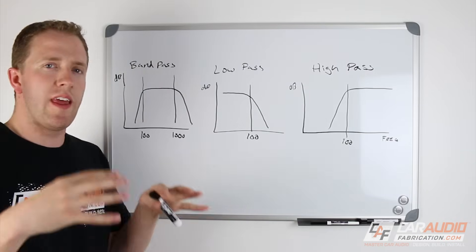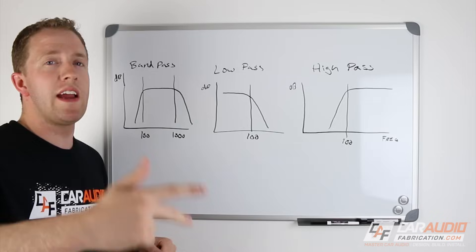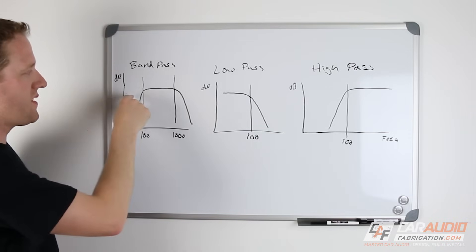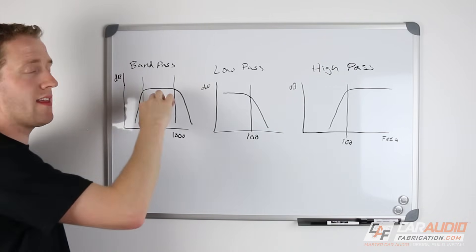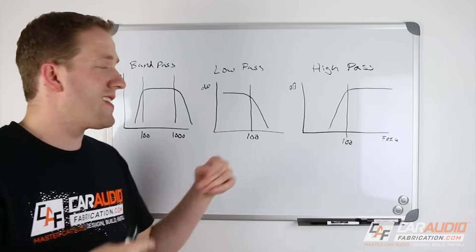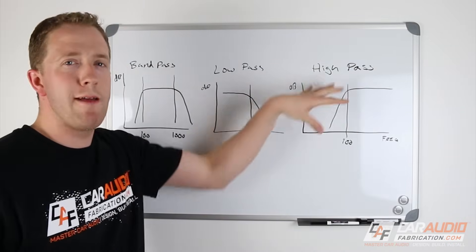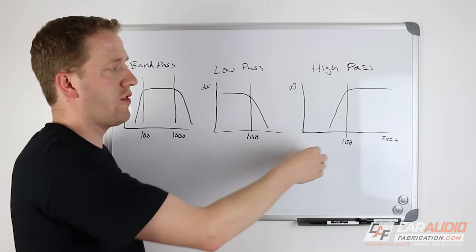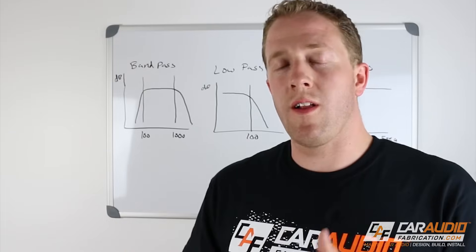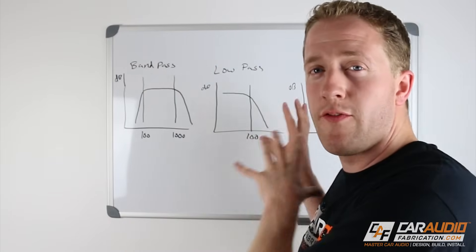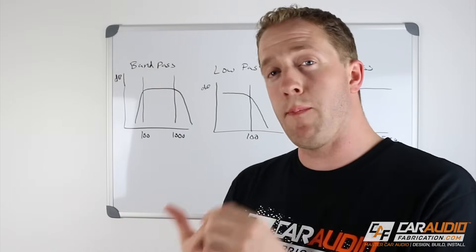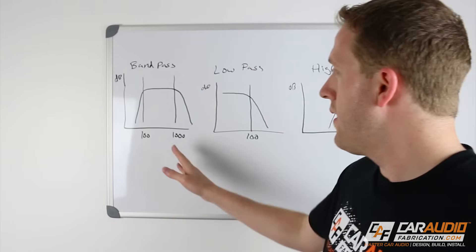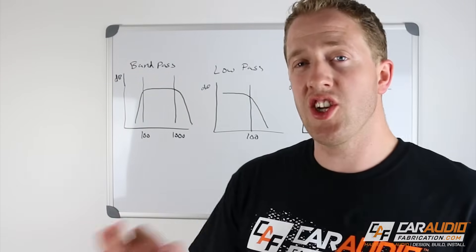You're going to go from a subwoofer, hand off to the mid-bass, then hand off to the mid-range and so on. A tweeter is a better example of a high-pass crossover because generally you're not going to have any sort of crossover on the top end of a tweeter — it's just going to be a high-pass crossover at whatever frequency you determine. For each of these three types of crossovers, there are active crossovers and passive crossovers. A passive crossover basically means the crossover has set values for the frequency and the slope, and we cannot change them.